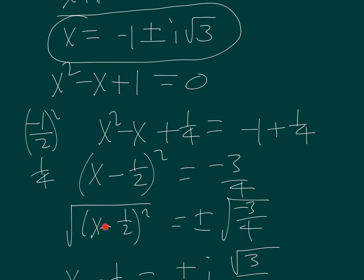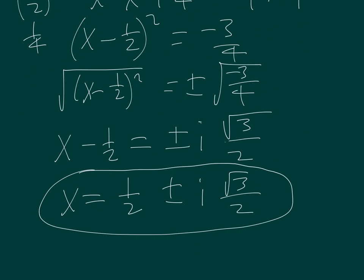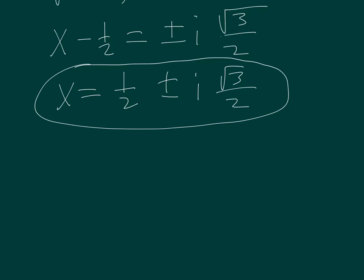So we'll take the square root of both sides and remember that we have to apply the plus or minus on the right. And then bringing the i out and adding one half to both sides we wind up with two other roots: x equal to one half plus or minus i root three over two. So there are two roots here.